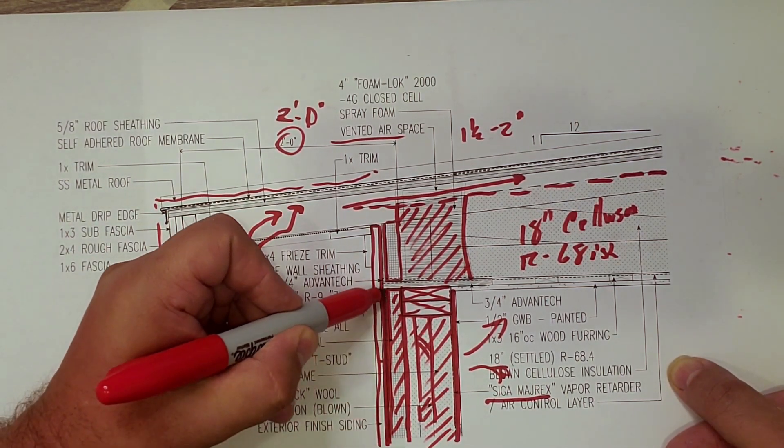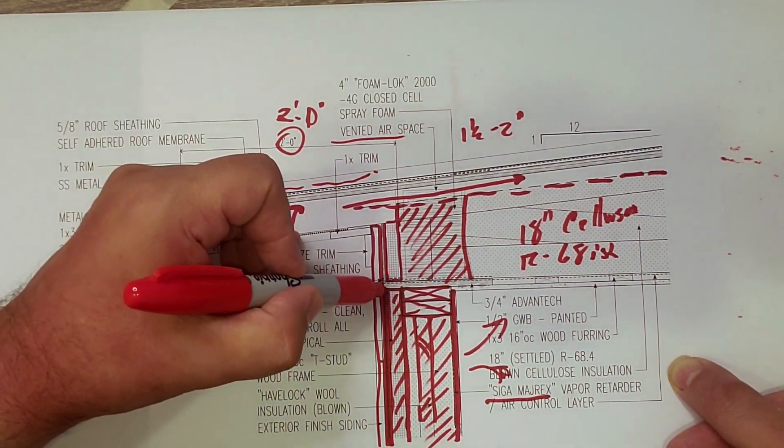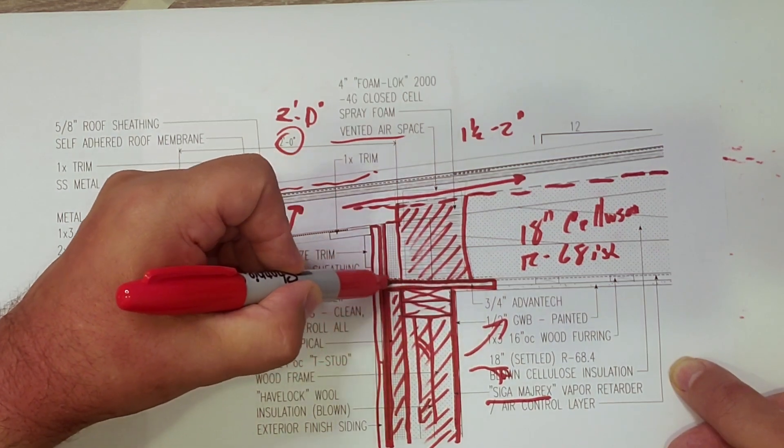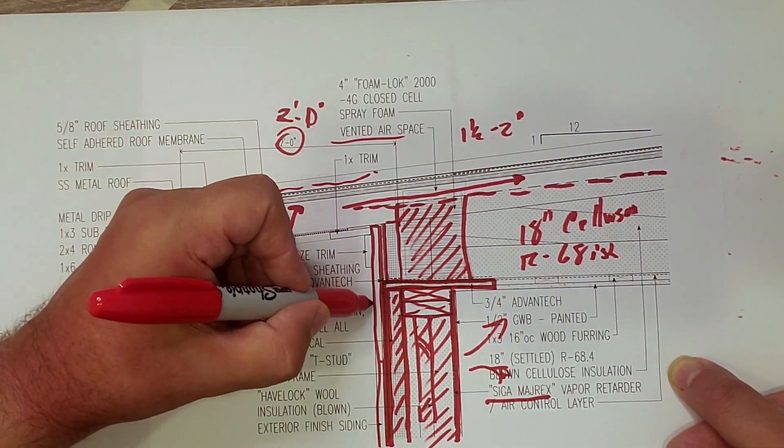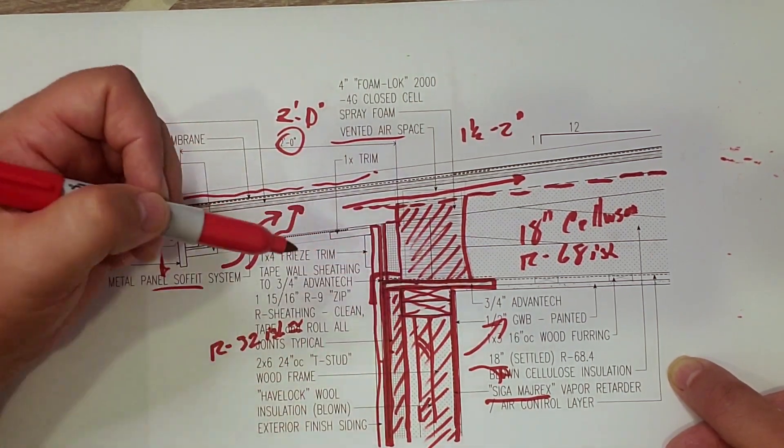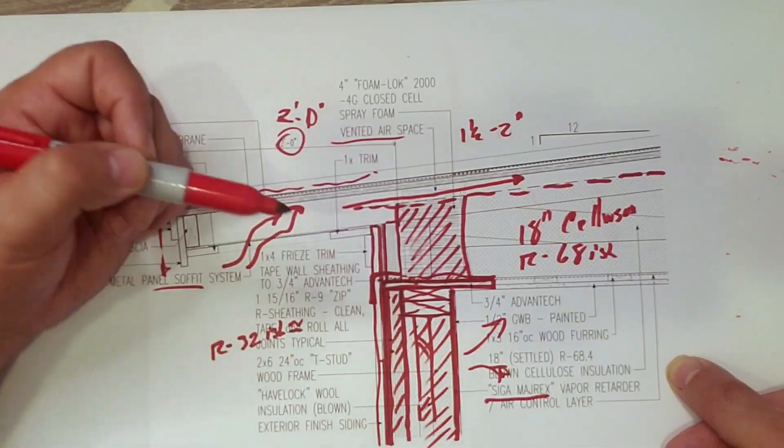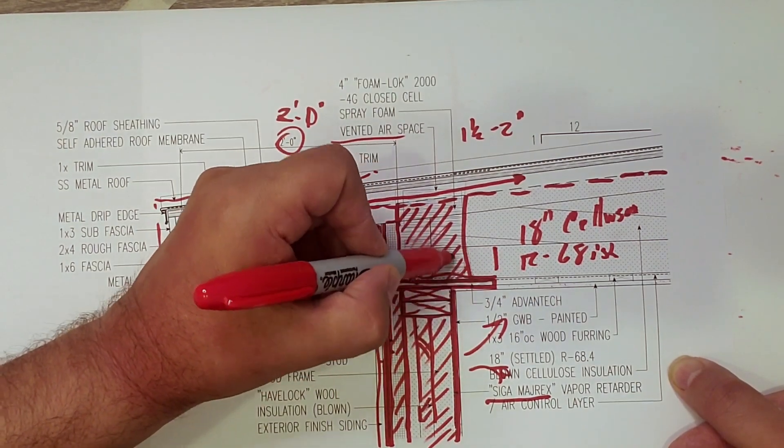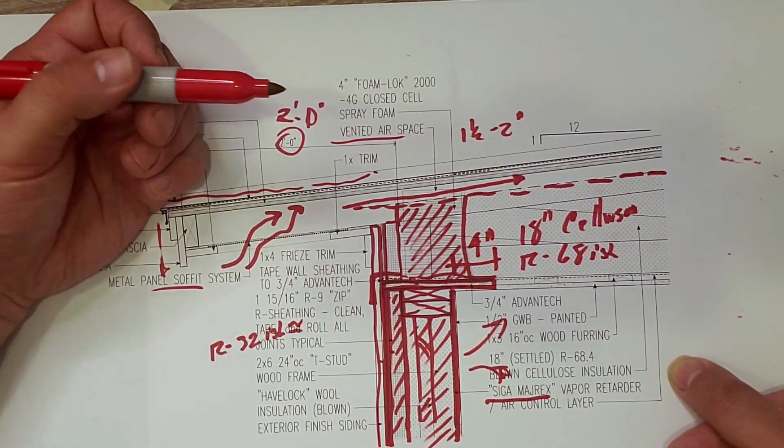Well, we use the face of the Zip R9 as our air barrier. Notice here we have a piece of three-quarter inch Advantec. It goes out to meet the R9 so that we can tape over that and basically connect the R9 to the Advantec. Obviously the butt joints of that Advantec get taped. But what that leaves us with is this four-inch flange that sticks out inside.